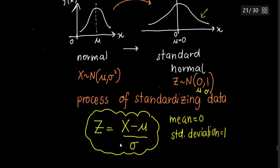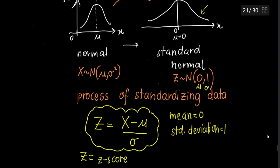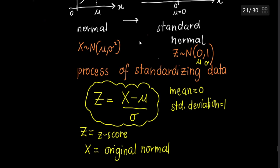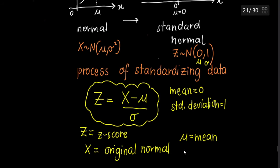Z is the z-score — the continuous random variable for the standard normal distribution. X is your continuous random variable from the original normal distribution. In the formula, μ (mu) is the mean, and σ is the standard deviation.